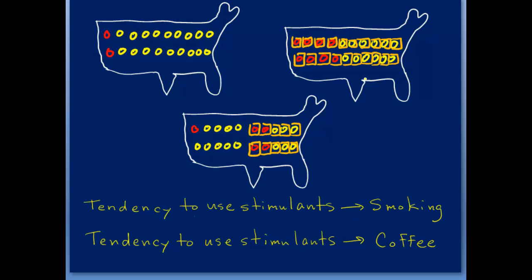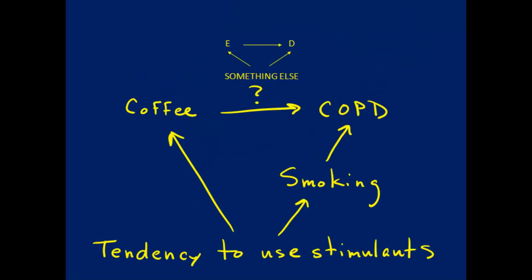You can use this reasoning when building causal diagrams: ask yourself whether, if everyone in the population had a certain exposure, the risk of another outcome would differ from if nobody had it. If you think it would differ, you can hypothesize a causal arrow between those variables.